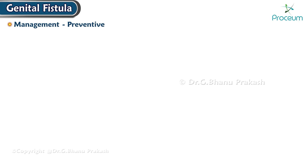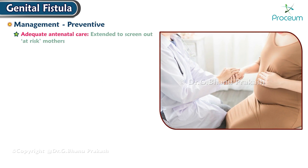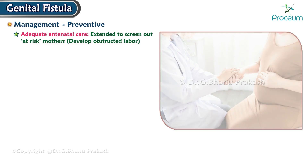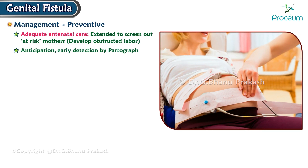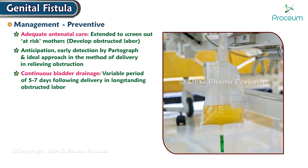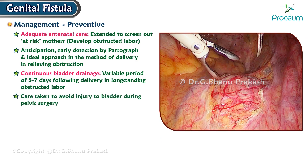Management — Preventive: Adequate antenatal care should be extended to screen out at-risk mothers likely to develop obstructed labor. Early detection can be done by partograph, with an ideal approach in the method of delivery and relieving the obstruction. Continuous bladder drainage for about five to seven days following delivery, either vaginally or abdominally, is recommended in cases of long-standing obstructed labor. Care must be taken to avoid injury to the bladder during pelvic surgery, obstetrical or gynecological.